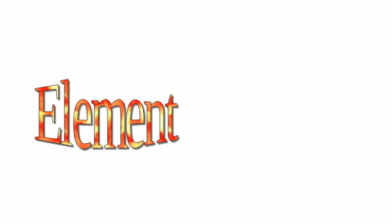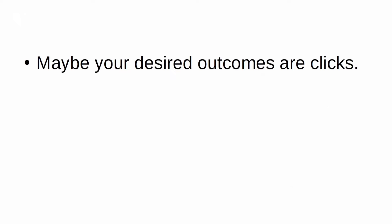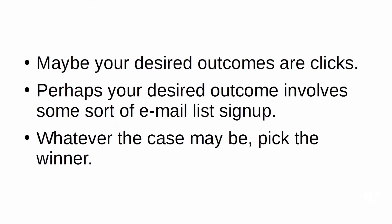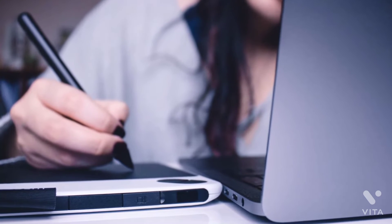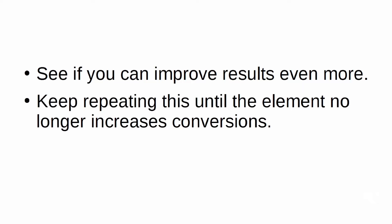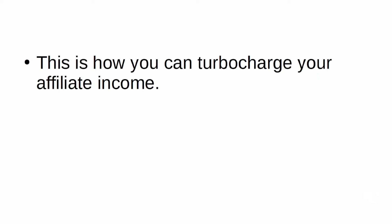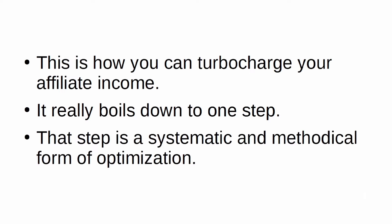Here's how you do it: first, come up with variations of the element — maybe five variations. Run the traffic through the website and pick the variation that produced the most of your desired outcome, whether that's clicks or email list sign-ups. Once you have identified the winner of that element, come up with five more variations. See if you can improve results even more. Keep repeating this until the element no longer increases conversions, then move on to the next element. This is how you turbocharge your affiliate income — one step: systematic and methodical optimization.